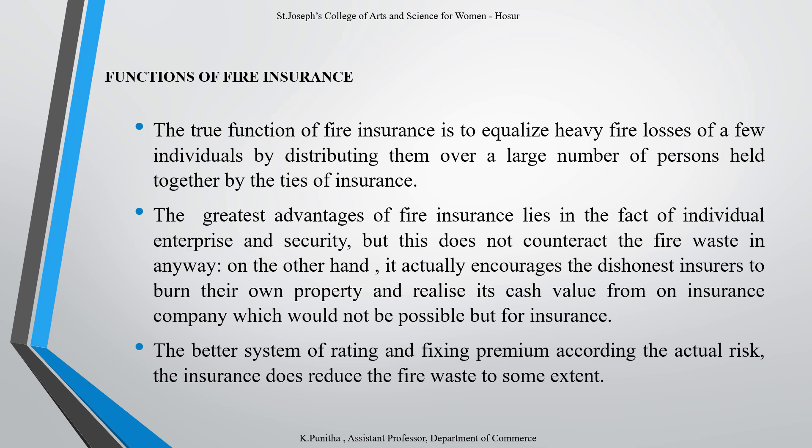Such damage, apart from causing the owner's financial loss, dislocates the community's economic activity. In spite of sustained efforts made by human ingenuity to achieve complete mastery of fire, material property continues to be liable to varying degrees of destruction or damage by the escape of fire. Some of the insurable properties are: buildings, electrical installation, contents of buildings such as machines, plant, equipment, accessories, etc.; goods such as raw materials, goods in process, finished goods, goods in open or in the premises; contents in dwellings, shops, hotels, furniture, fixtures and fittings, and other movable and immovable properties.